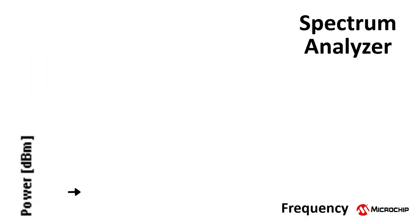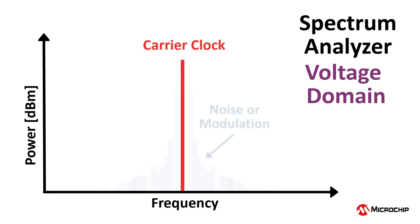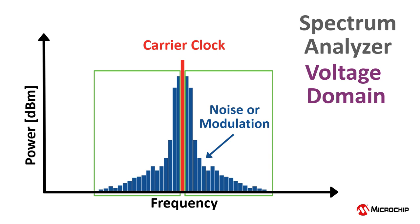A spectrum analyzer can display a carrier clock with noise or modulation quantified as dBm voltage domain power that is spread around the ideal center carrier frequency.